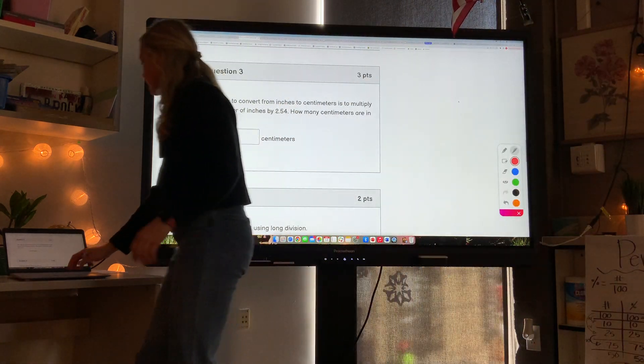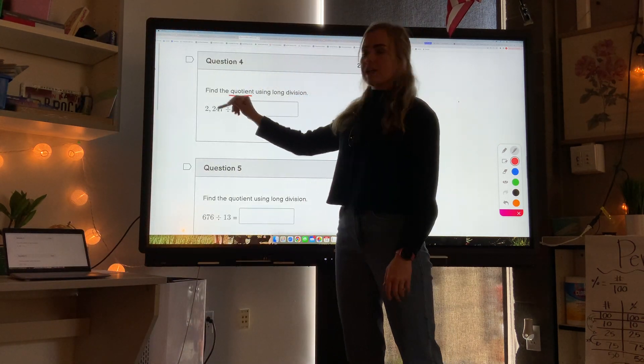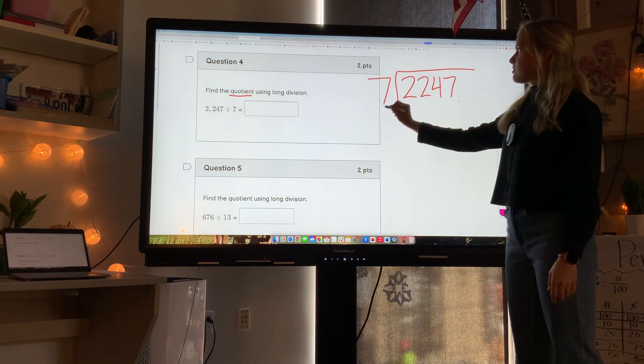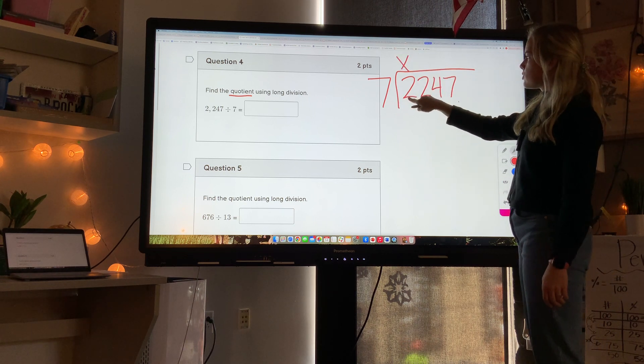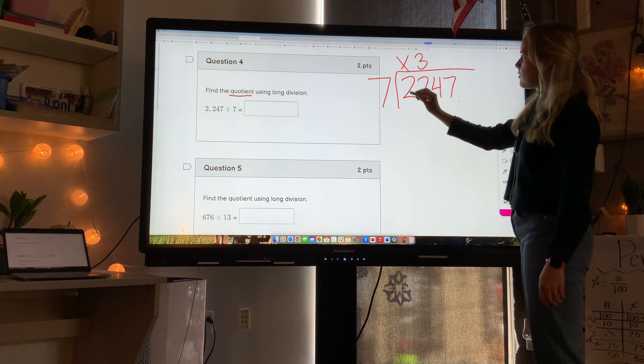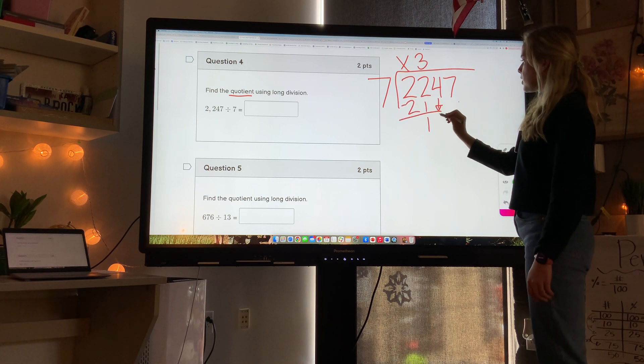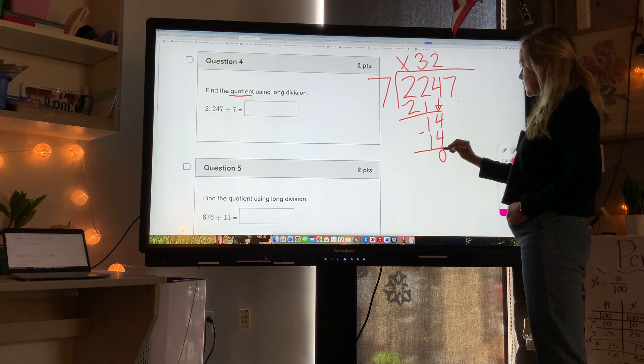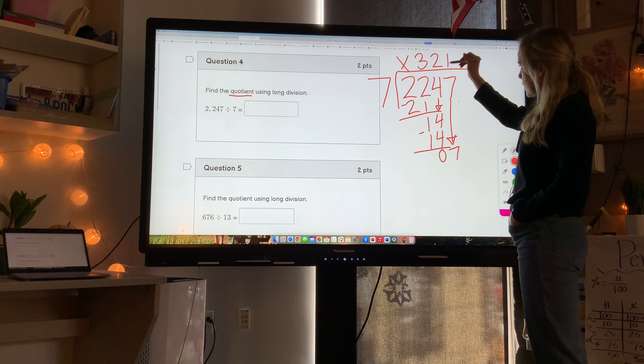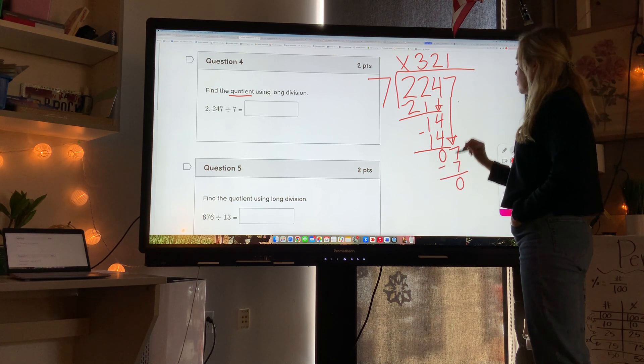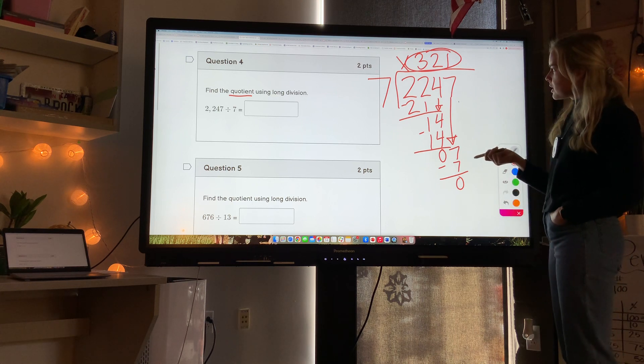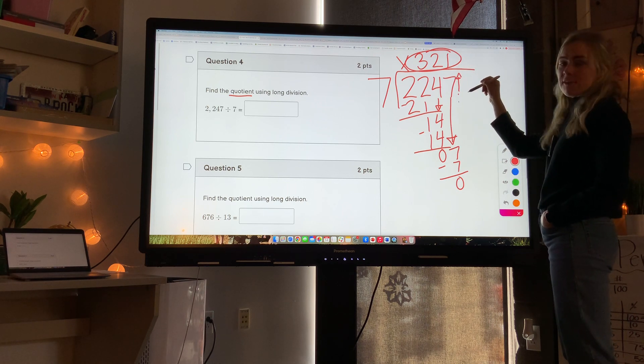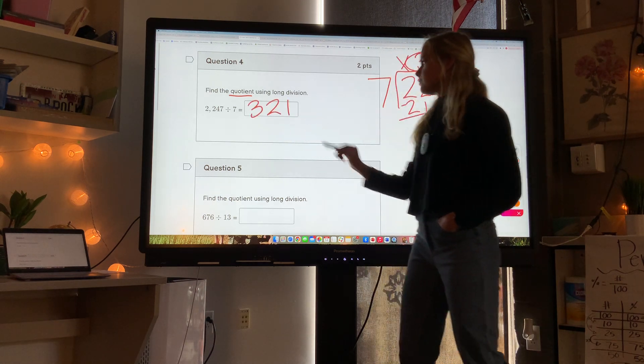Question 4: find the quotient. Quotient is just the answer to a division problem. So I'm doing 2247 divided by 7. The number we divide by goes on the outside, the divisor. Seven goes into 2 no times. Seven goes into 22 three times. Three times seven is 21. Subtract and we get 1. Bring down the 4. Seven goes into 14 two times. Two times seven is 14. Subtract and we get 0. Bring down the last digit. Seven goes into 7 one time. One times seven is 7. So my quotient is 321. If there was a decimal in here, like let's say it was here, then we would bring it up. But since there's no remainder, we didn't have to add a zero. So just 321.